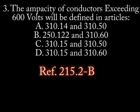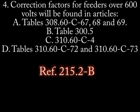Number 3: The ampacity of conductors exceeding 600 volts will be in accordance with: A. Article 310.14 and 310.50. B. Article 250.122 and 310.60. C. Article 310.15 and 310.50. D. Article 310.15 and 310.60.